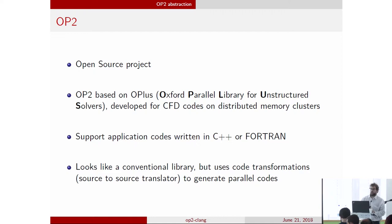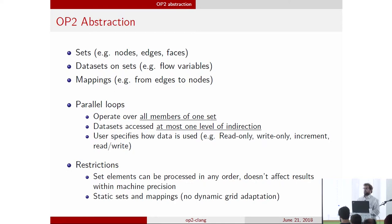The OP2 framework basically looks like a conventional library for the developer. They use the OP2 API calls, and then OP2 has a source-to-source translation step which creates target-specific parallel implementations of the computational loops. With OP2, we can specify all the major parts of the unstructured mesh application — the sets, the data on the sets, and the maps — as well as the computational loops, which contain the definition of the computation on each set element and the access patterns to perform that computation.